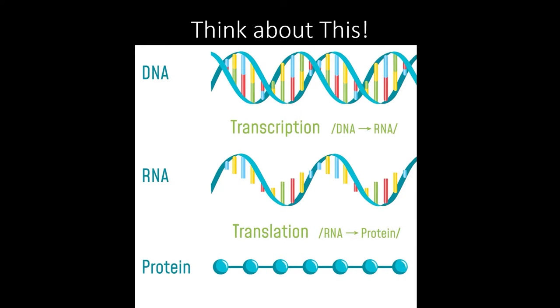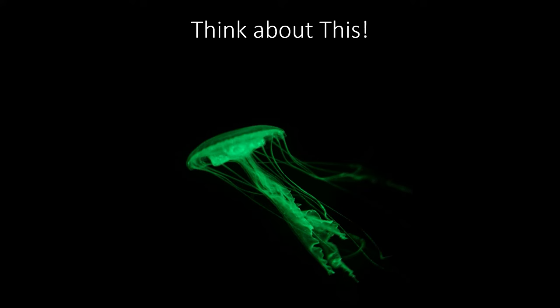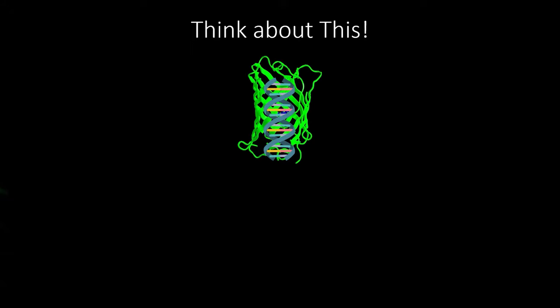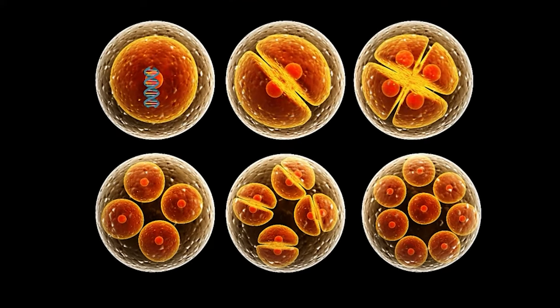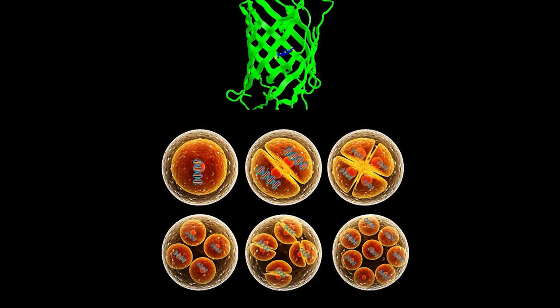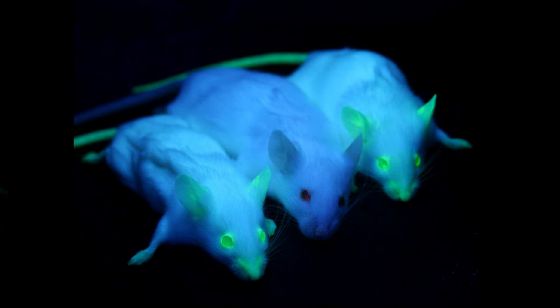DNA creates protein, and proteins create a function within cells. Therefore, if we change the DNA within a cell, we can change how that cell functions. We can prove this theory with a simple experiment. Jellyfish produce a protein that emits a green fluorescence under UV light. Scientists found the gene that codes for this protein and transferred it into the nucleus of a mouse zygote. As this zygote developed, the gene was duplicated and spread throughout the body of the adult mouse. When these adult mice were exposed to UV light, they glowed green, just like the jellyfish.